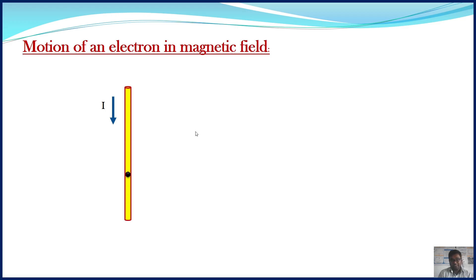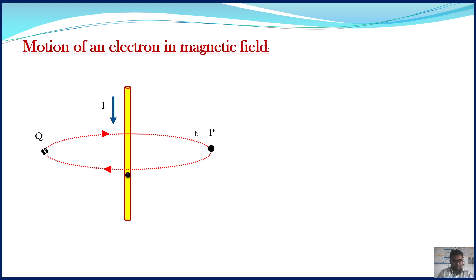According to the right-hand thumb rule, the magnetic field lines in this case will be circular, and the magnetic field will be clockwise as shown in the animation. Consider the two points P and Q. At point P, the direction of magnetic field is out of the plane, shown by the solid dot. And at point Q, the direction of magnetic field is into the plane, shown by the symbol cross. Now consider a charge Q, shown by the black dot.